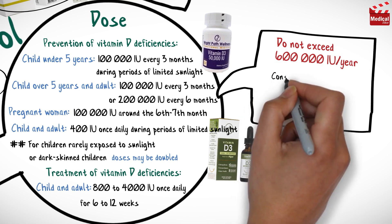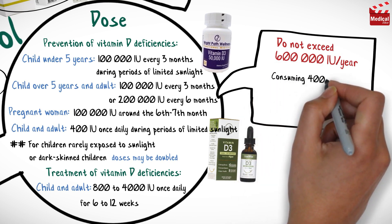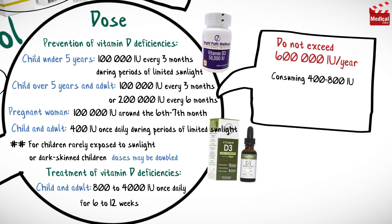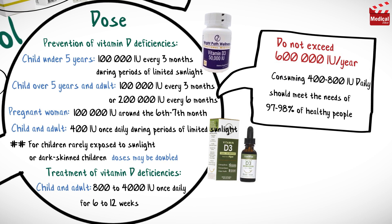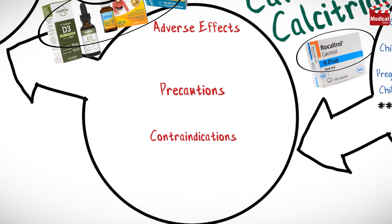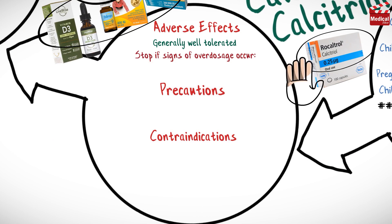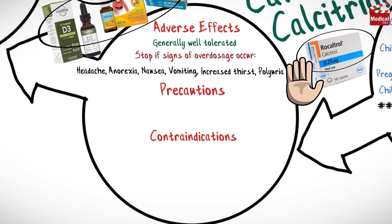In general, consuming 400 to 800 IU of vitamin D should meet the needs of 97 to 98 percent of healthy people. Vitamin D is generally well tolerated, so stop treatment if signs of overdosage occur, such as headache, anorexia, nausea, vomiting, increased thirst, and polyuria.